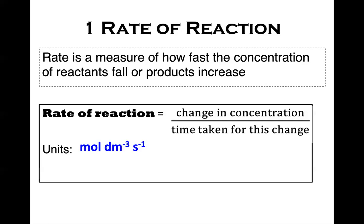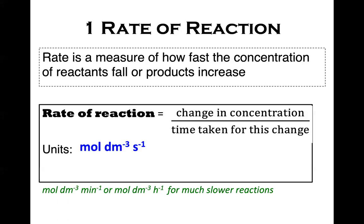There is also mol dm⁻³ per minute or mol dm⁻³ per hour — it all depends on the question. Read the graph carefully; read the axis. If the time is in seconds, write mol dm⁻³ s⁻¹. If it's in minutes or hours, adjust accordingly.